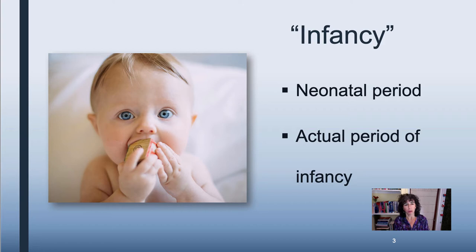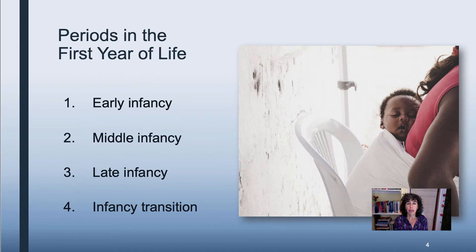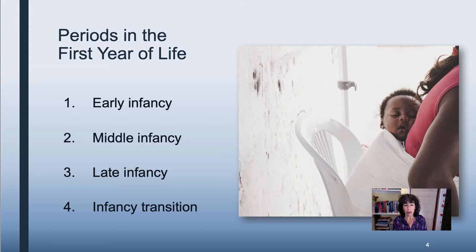During this period of infancy, there's significant environmental mastery across all behavioral domains. The processes that underlie this change are both intrinsic and extrinsic. Intrinsic changes arise from physiological changes in the child, and extrinsic changes arise from the impact of caregivers and the environment on that infant. The first year of life is divided into four basic periods: early infancy from birth through three months, middle infancy from four to six months, late infancy from seven to nine months, and a transition period from infancy to toddlerhood at 10 to 12 months.